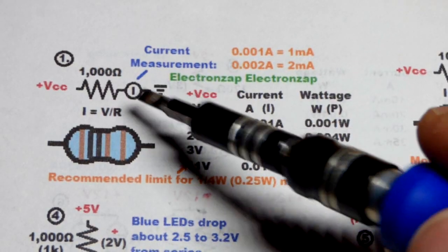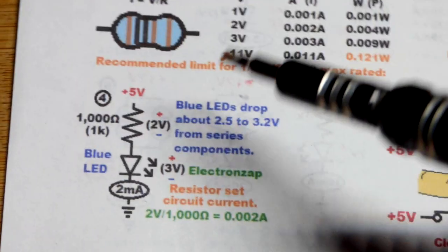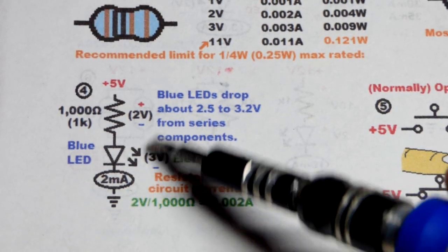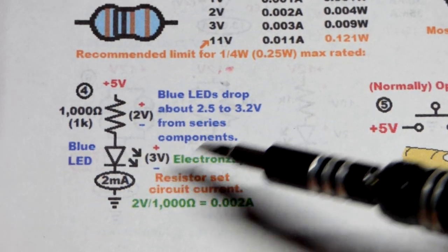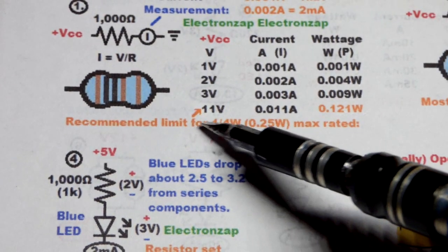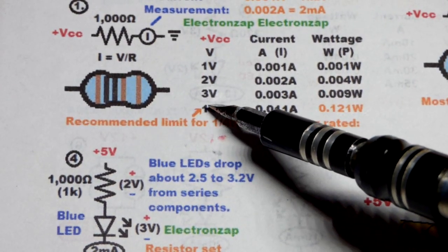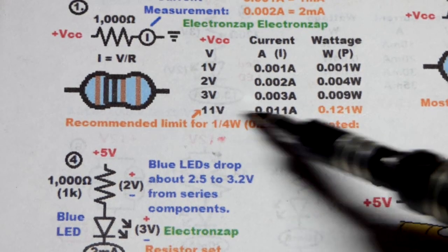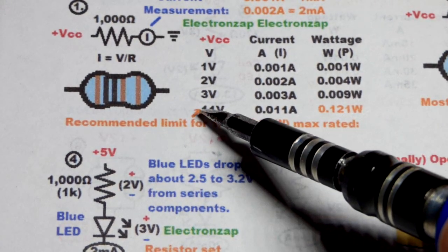Usually we have an LED in series. So like a blue LED right here is going to drop about three volts. So if we have 12 volts total, there's only going to be about nine volts across the 1000 ohm resistor, which is lower than the 11 right here.